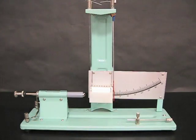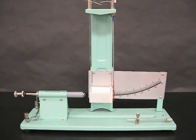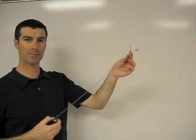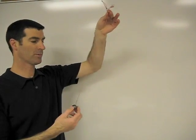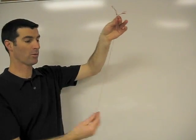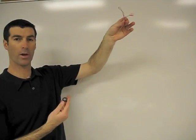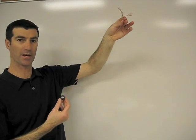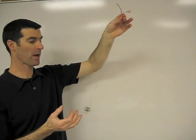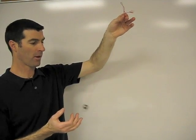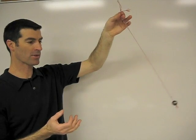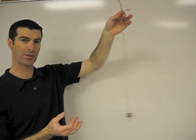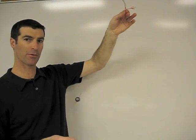We then measure the angle to which it rises, and from that we can calculate how much energy was passed. Here is a pendulum, which is basically a cord with a weight or a bob on the end. When we let it swing back and forth, what we have is conservation of energy demonstrated in one of its simpler forms.